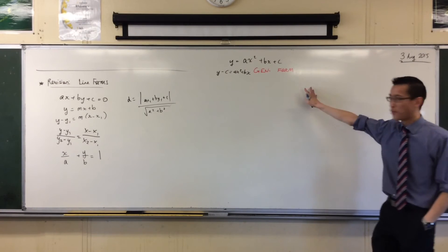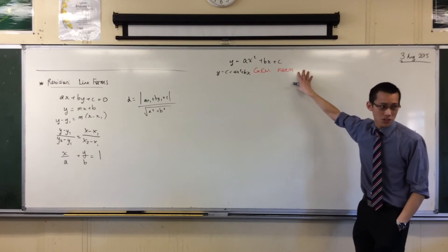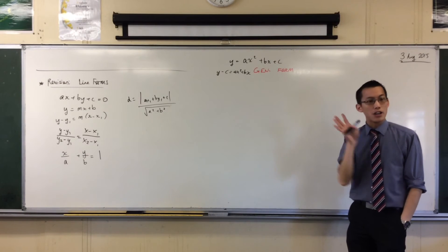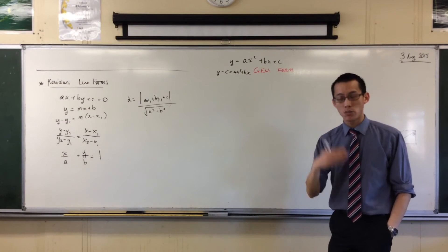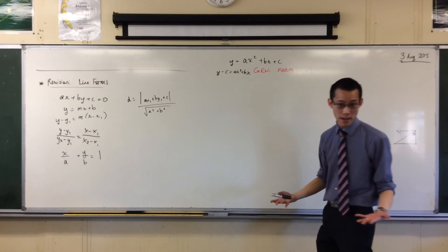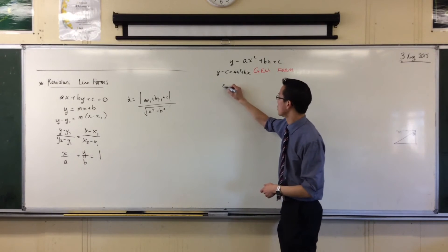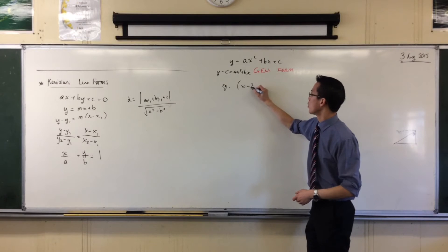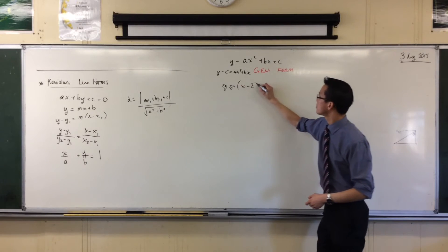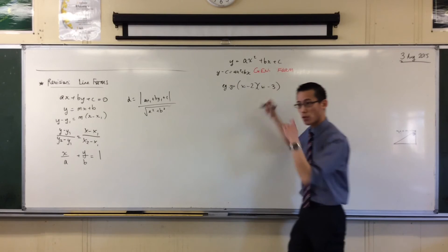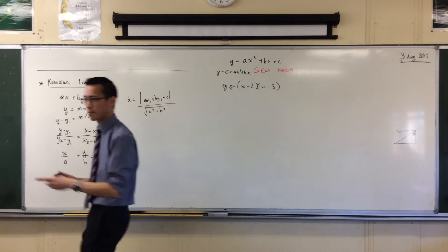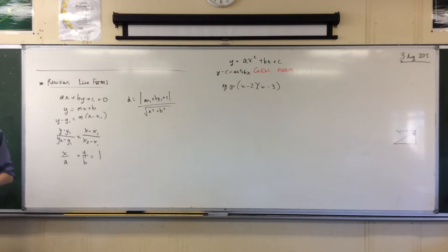Now, like I said, general form, not great for seeing features. A useful form which you try to work toward a lot is a factorized form, right? So, for example, the one we did this morning. Y equals... Now, why is a factorized form useful? What's valuable about it? It gives you two x intercepts. Very good.